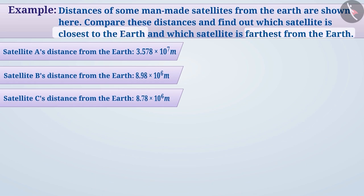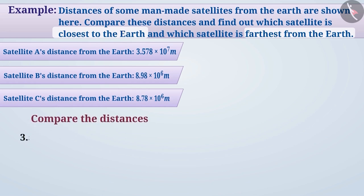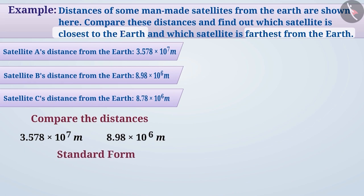In order to find the closest and farthest satellite from the earth, we will compare their distances. Let us first compare 3.578 × 10 to the power of 7 metres and 8.98 × 10 to the power of 6 metres. Both distances are in metres, so they have the same units and we can compare these two numbers. Both numbers are in standard form, and we observe that the power of 10 is not equal in both numbers.